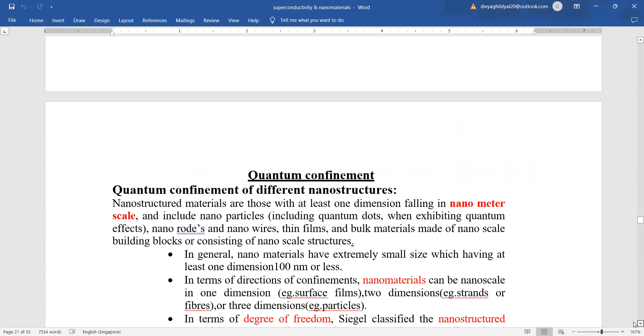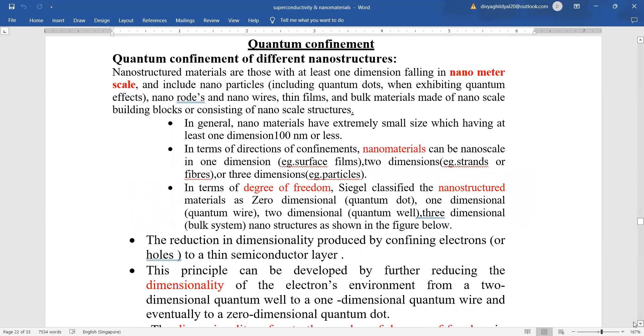Now, we are going to study quantum confinement. Nanostructured materials are those with at least one dimension falling in nanometer scale, including nanoparticles, that is quantum dots, nanowires, thin films, etc. So, nanomaterials have very small size and they are coming under the scale of nanoscale.